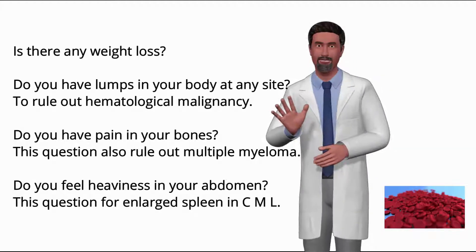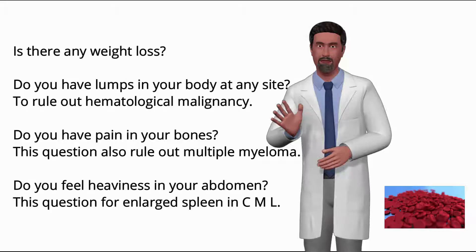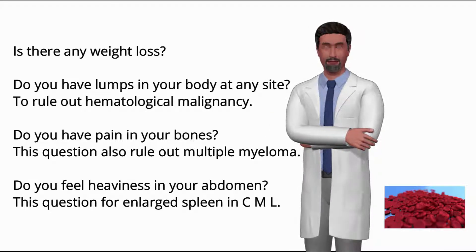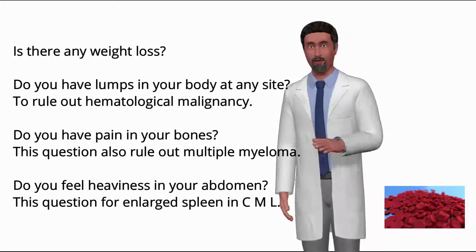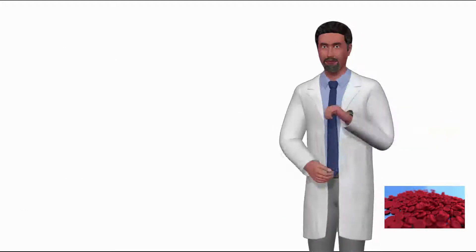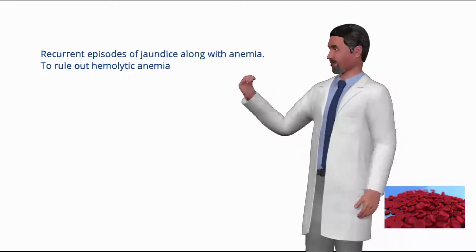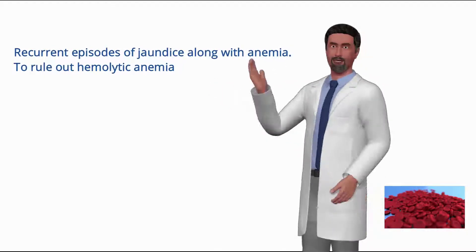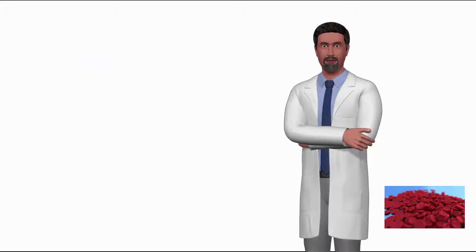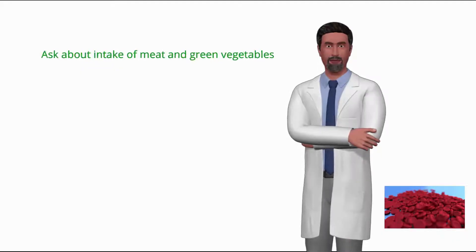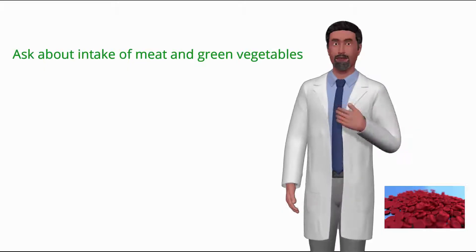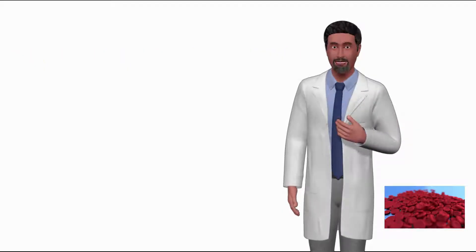Ask: do you have pain in your bones? This also helps rule out multiple myeloma. Do you feel heaviness in your abdomen? This question addresses enlarged spleen in CML. Ask about a history of recurrent episodes of jaundice along with anemia to rule out hemolytic anemia. Also ask about the patient's diet — intake of meat and green vegetables.